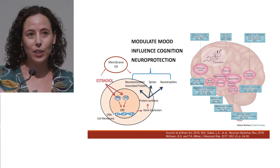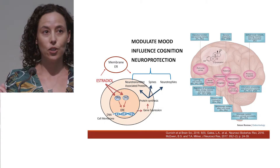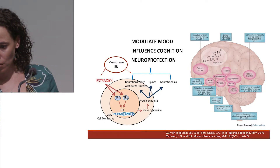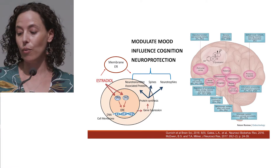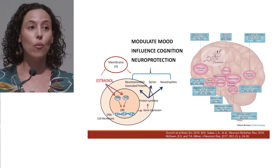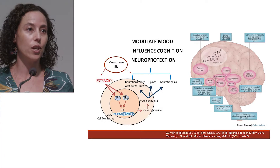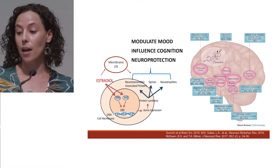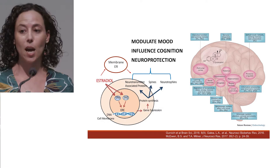Oestradiol can act on intracellular oestrogen receptors where it can act to regulate gene expression and protein synthesis, and then can act on a range of different neurotransmitter pathways — dopaminergic pathways, serotonergic pathways, glutamatergic pathways — a whole lot of pathways that are involved in regulating our cognition and our mood.